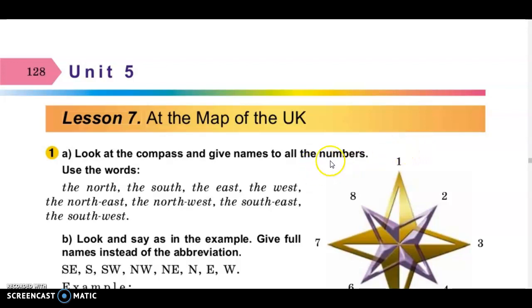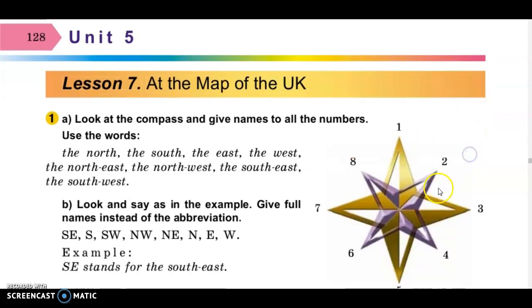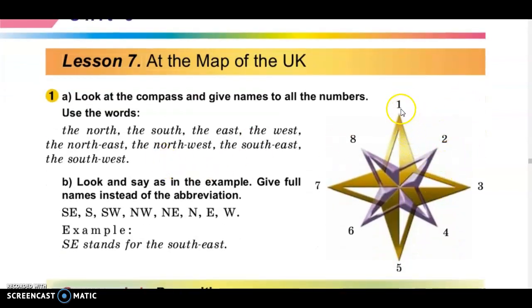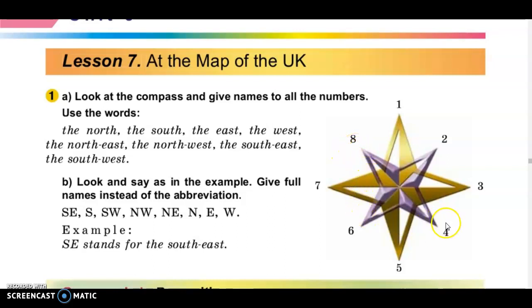Hello! Unit 5 — at the map of the UK. You have already learned the words: the north, the south, the east, the west, the north-east, the north-west, the south-east, the south-west.